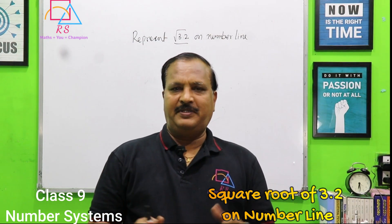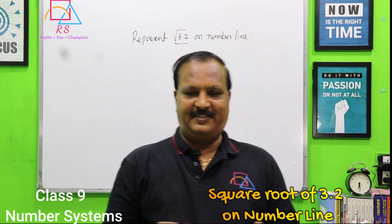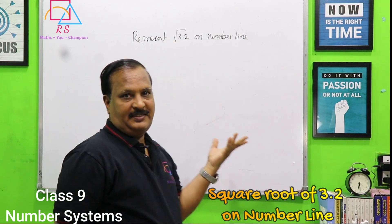Till now, we have represented root 3, root 2, root 5, root 11, root 17, etc. Now, this decimal number we have to represent.